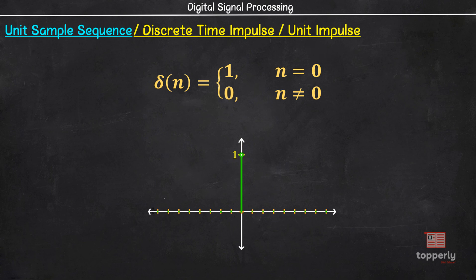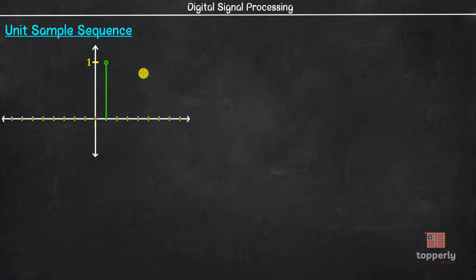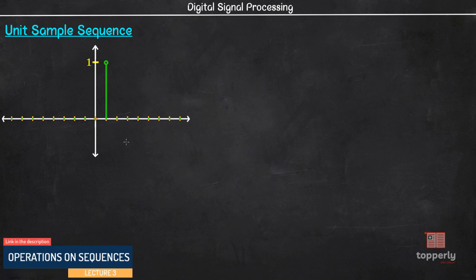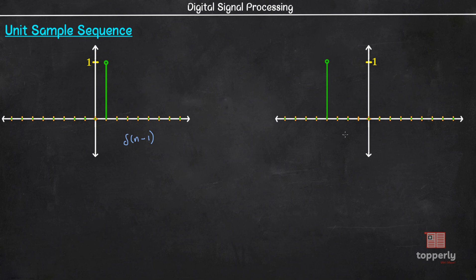Now let us play with time shifting of the unit impulse. Consider this sequence — it is time shifted to the right by 1 unit, or in other words it is delayed by 1 unit. As we learned in lecture 3, this sequence is δ(n-1). Let us consider one more sequence — here the sequence is time shifted to the left by 4 units, or advanced by 4 samples. As per lecture 3, this sequence is δ(n-(-4)), which is δ(n+4).